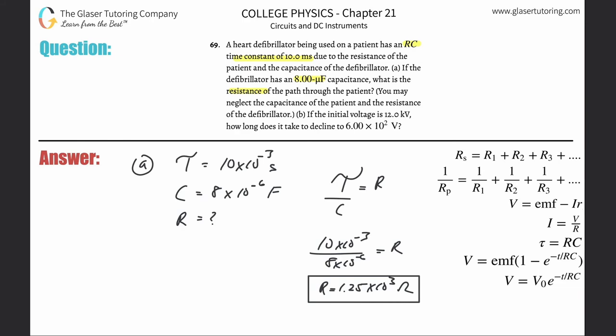Letter B. If the initial voltage is 12 kilovolts, how long does it take to decline to 6 times 10 to the 2 volts? So they're talking about a capacitor discharging. If the initial voltage is high and it declines, right? They give you kilovolts instead of volts. This is just simply 1.2 times 10 to the fourth volts. Notice this went from 1.2 times 10 to the fourth, now 6 times 10 to the 2. It's discharging.